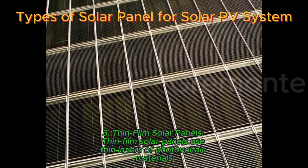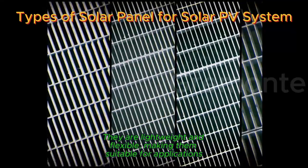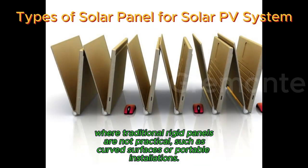3. Thin-film solar panels. Thin-film solar panels use thin layers of photovoltaic materials deposited onto a substrate, such as glass, metal, or plastic. They are lightweight and flexible, making them suitable for applications where traditional rigid panels are not practical,